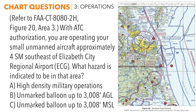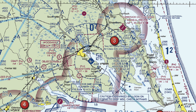For the next two questions we'll be on figure 20. The first says: refer to figure 20, area 3. With ATC authorization, you are operating your small unmanned aircraft approximately four statute miles southeast of Elizabeth City Regional Airport. What hazard is indicated in that area? The first thing we need to do is find Elizabeth City at area 3 — it's just to the southwest, and it's this Class Delta airspace, which is our reference point. We are operating four statute miles southeast of that airport.